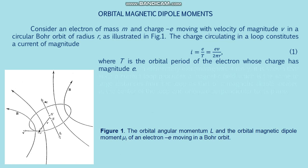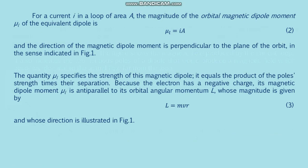The magnetic field, at large distances from the loop, is the same as that of a magnetic dipole located at the center of the loop and oriented perpendicular to its plane. Figure one shows the orbital angular momentum L and the orbital magnetic dipole moment μ_L of an electron moving in a Bohr orbit. For a current I in a loop of area A, the magnitude of the orbital magnetic dipole moment is μ_L = I·A, formula two.